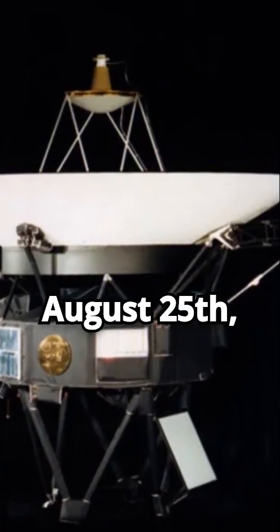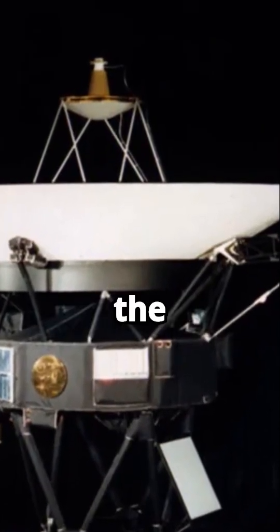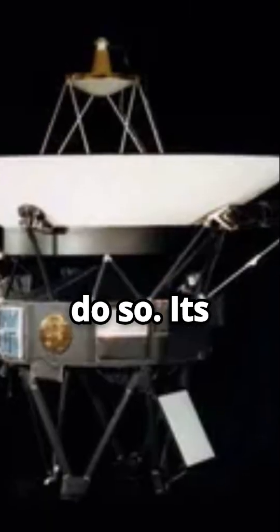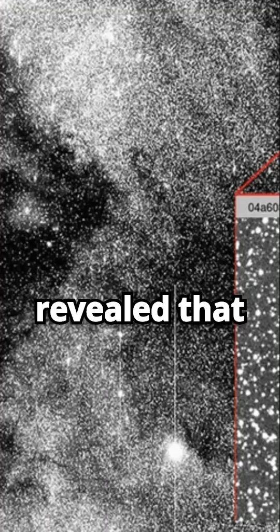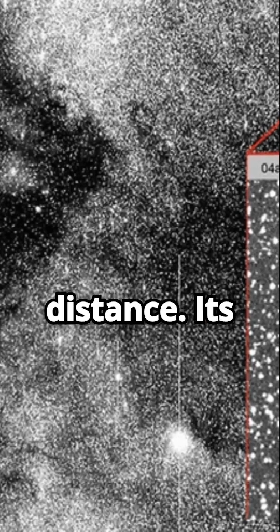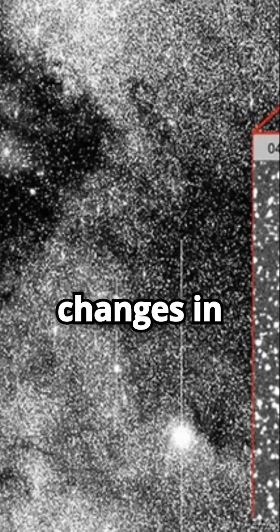On August 25, 2012, Voyager 1 crossed the heliopause, becoming the first spacecraft to do so. Its twin, Voyager 2, followed in 2018. These crossings revealed that the heliopause is not a fixed distance; its location shifts with changes in solar activity.